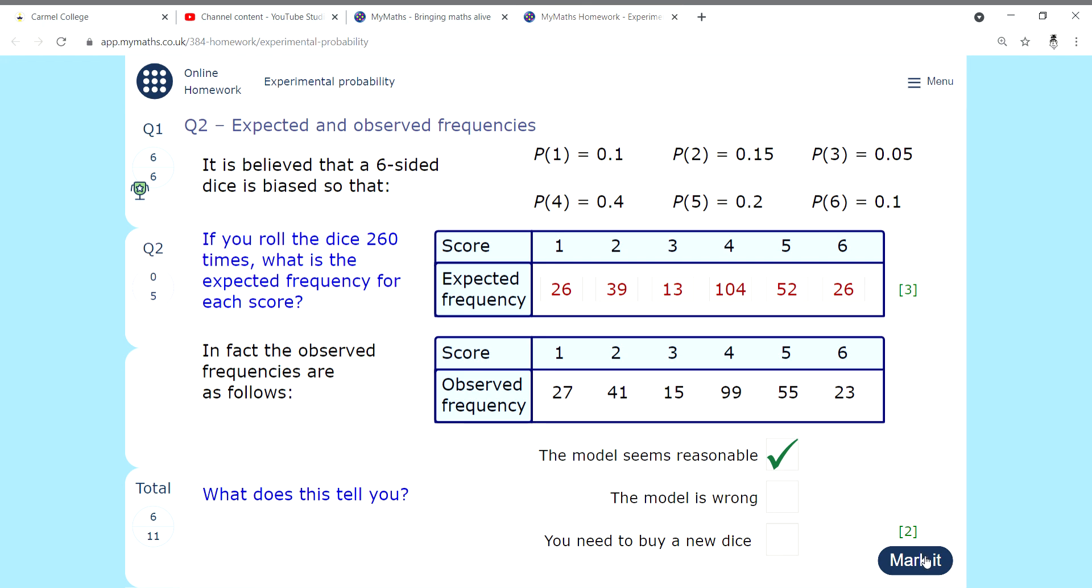That's it for experimental probability. The big thing from experimental probability is two things: number one, when it says relative frequency, you can just think of what's the probability of that happening. And then once you know the probability of something happening, you multiply by the number of times you've actually done it to figure out how many you would expect to get. Expected frequency. I hope this has been helpful. If it has, hit like, subscribe, let your friends know. I'm here to help.